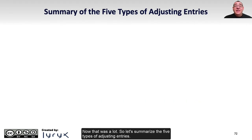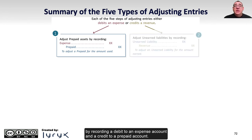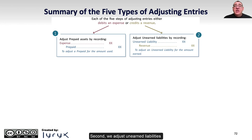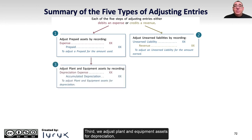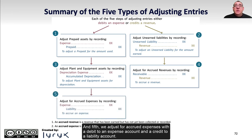To summarize the five types of adjusting entries: first, prepaid assets — debit an expense account, credit a prepaid account; second, unearned liabilities — debit an unearned liability account, credit revenue; third, plant and equipment assets for depreciation — debit depreciation expense, credit accumulated depreciation; fourth, accrued revenues — debit a receivable account, credit revenue; and fifth, accrued expenses — debit an expense account, credit a liability account.